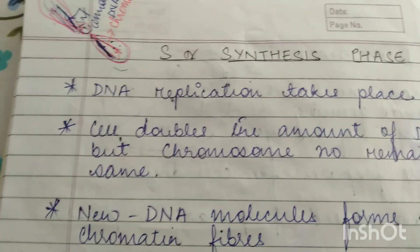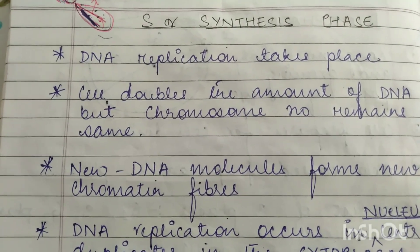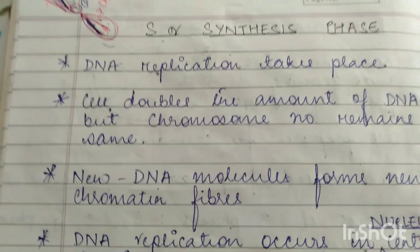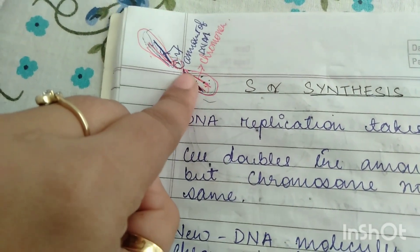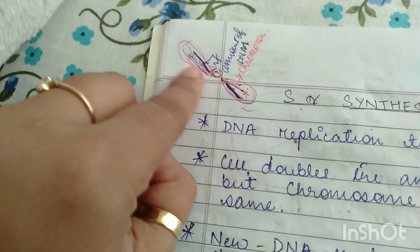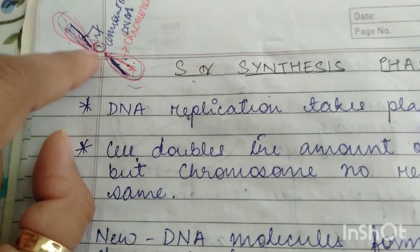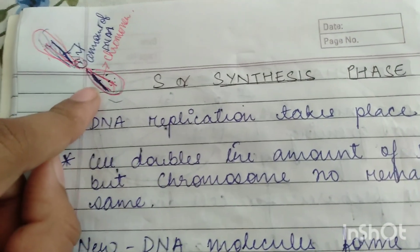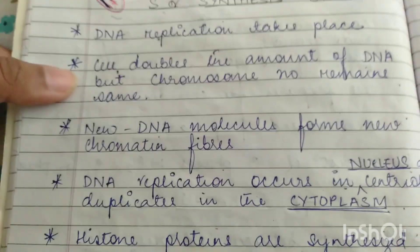S stands for synthetic phase. In synthetic phase, DNA replication takes place. The cell doubles the amount of DNA but the chromosome number remains the same. Looking at the diagram: this is a single chromosome. Initially we have only the red color line, which we call chromatonema. During S phase, there will be replication of this thin thread-like structure, and at the end of S phase we get two thread-like structures. So here the chromosome number is 1 but the chromatonema has increased. Chromatonema is nothing but DNA bounded to histone proteins, which we call nucleosome.